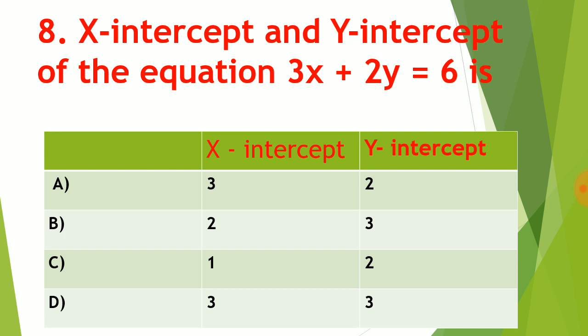Question number eight: the simplest way to find the x-intercept and y-intercept is — to find the x-intercept, keep y = 0. You will get 3x = 6, so x = 2. To find the y-intercept, keep x = 0. You will get 2y = 6, so y = 3. The correct answer is option B. Another way: divide the equation by 6 on both sides and compare with x/a + y/b = 1, where a is the x-intercept and b is the y-intercept.